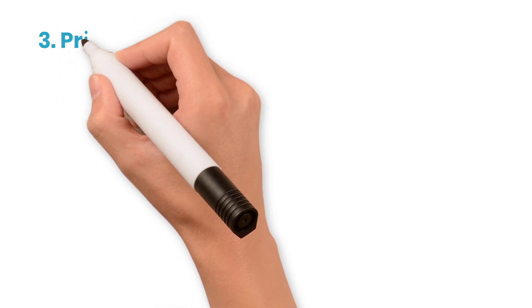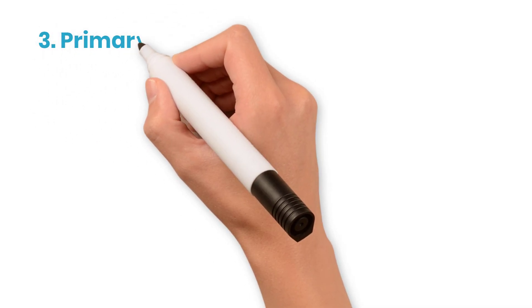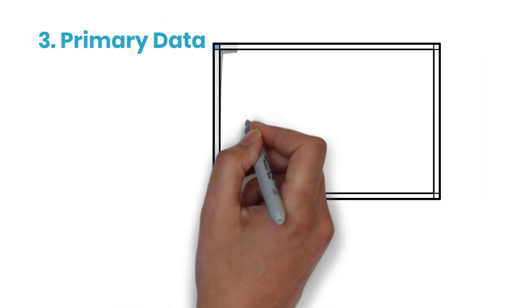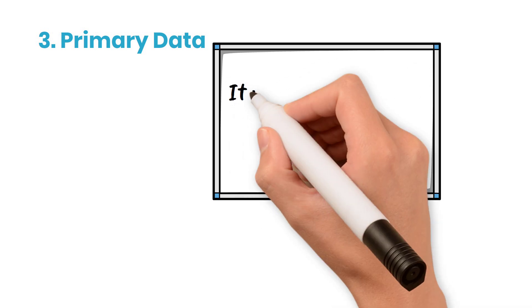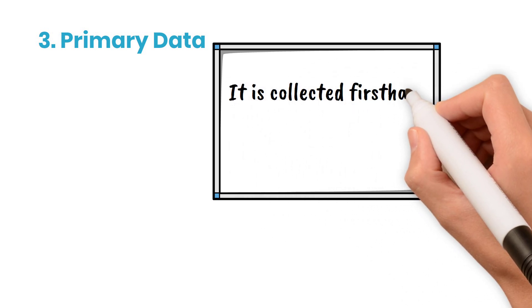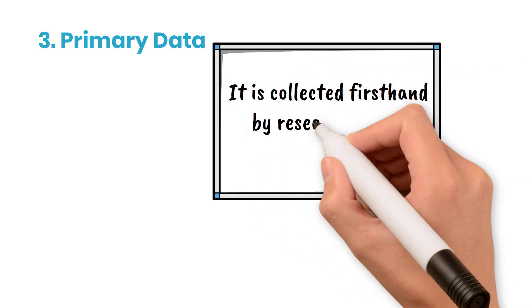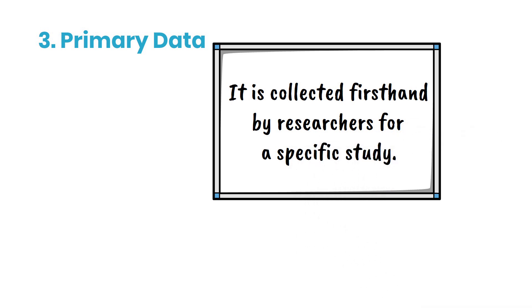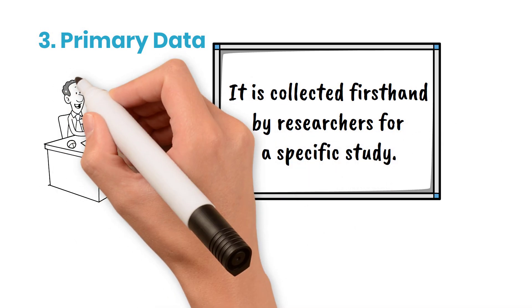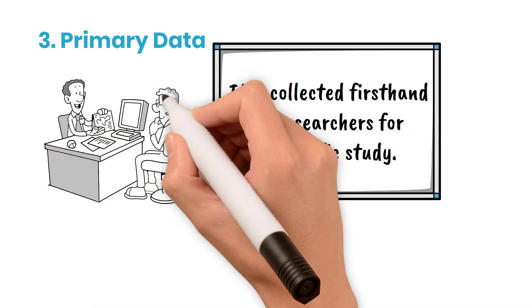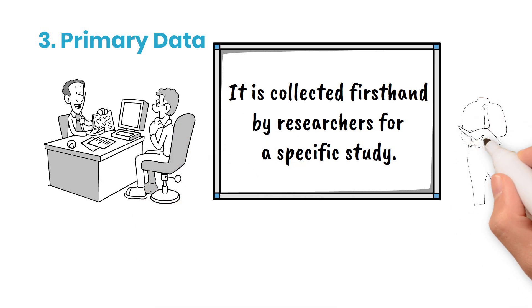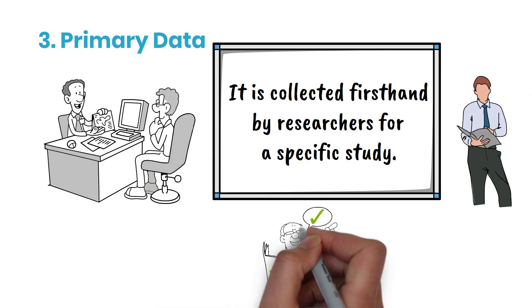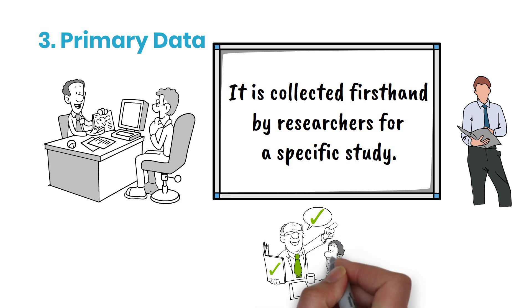Number three: primary data. It is collected firsthand by researchers for a specific study. It's tailored to address particular research questions and is often more time-consuming and expensive to gather. For example, a sociologist investigating workplace dynamics might distribute surveys to employees, conduct focus groups, and observe team meetings in various companies.